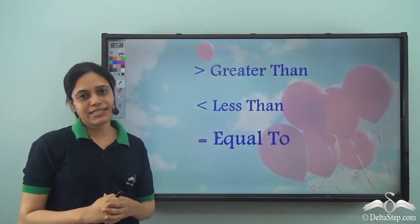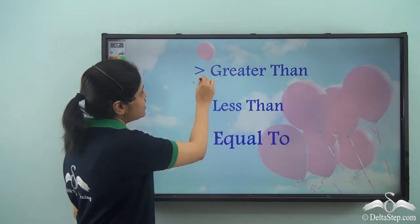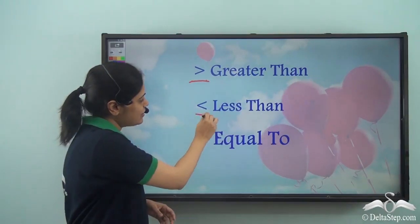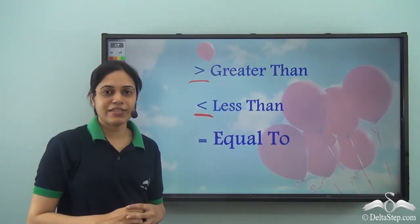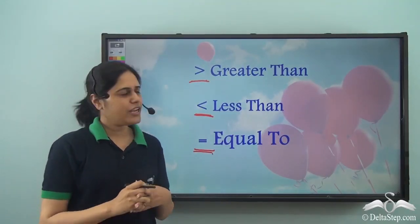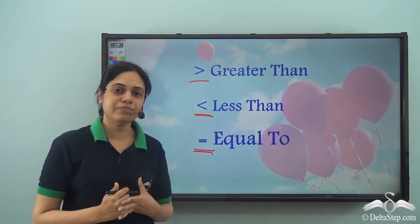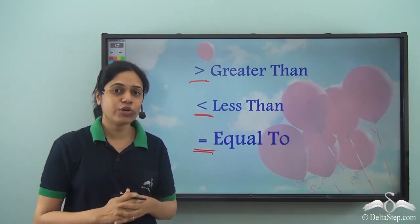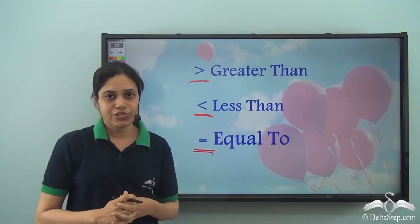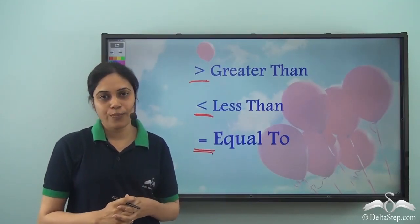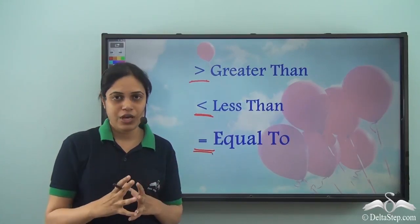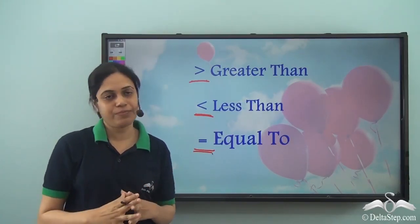Wouldn't it be easy if you know how to compare two numbers in a quick way? Now, do you recall these symbols? This is the greater than symbol, this is the less than symbol, and this is the equal to symbol. Do you recall the story of the evil alligator? The evil alligator always used to open his mouth wherever he saw a bigger number — he used to open his mouth and eat it up.